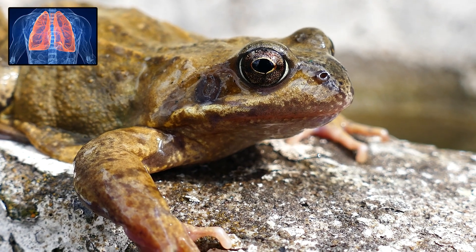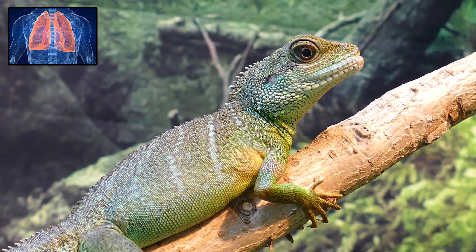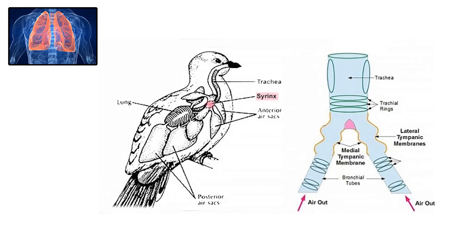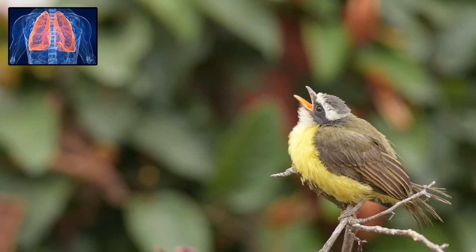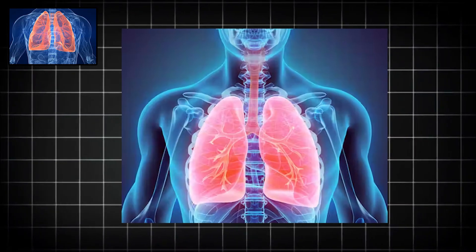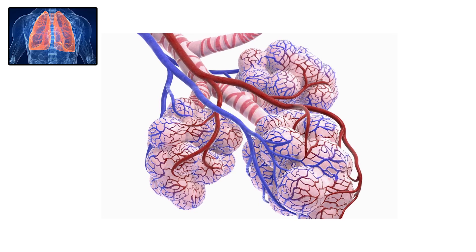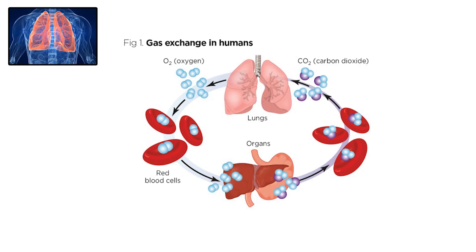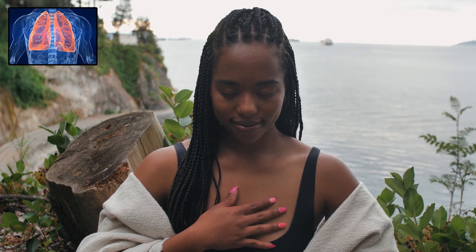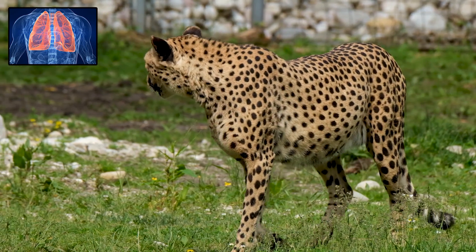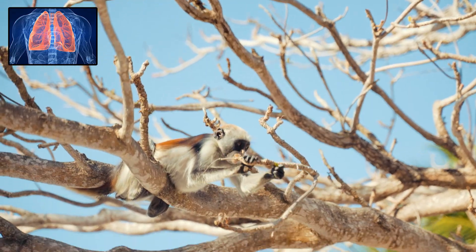Amphibians, like frogs, inherited these basic lungs and still often rely partly on their skin for breathing. Reptiles took it further, evolving larger lungs. Birds developed one of the most efficient respiratory systems in the animal kingdom, with air sacs and a one-way flow of air that maximizes oxygen absorption — an adaptation that supports the high energy demands of flight. In mammals, lungs are complex sponge-like organs that house millions of tiny air sacs called alveoli, where critical gas exchange happens as oxygen moves into the blood and carbon dioxide moves out. Animals with lungs could grow larger, become more active, and travel farther, leading to the evolution of high-speed runners, burrowers, climbers, and flyers.